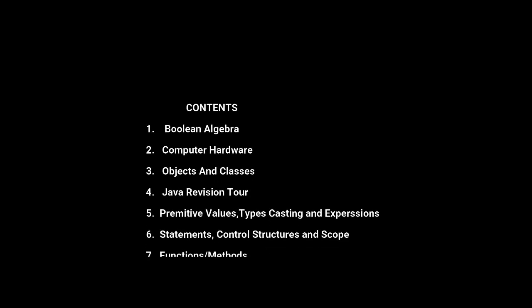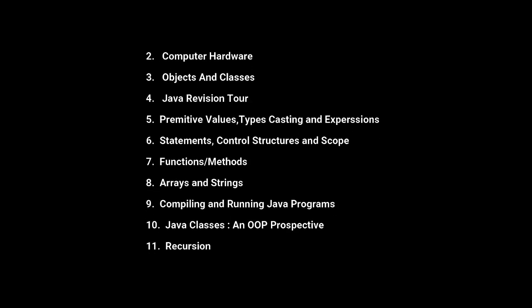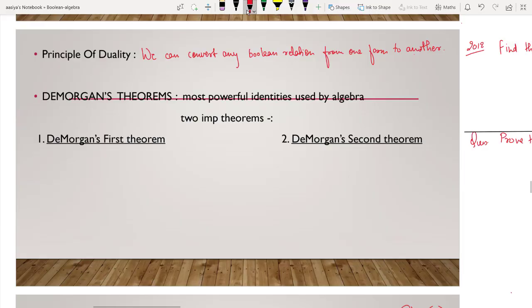In this video lecture series you will learn the entire syllabus of Class 12 Computer Science with Java. Let's start with Chapter 1. Welcome to Lecture 3. The topic is Principle of Duality. The Principle of Duality means we can change one boolean expression to another boolean expression with the help of some laws.